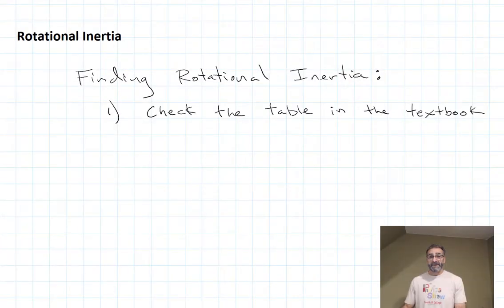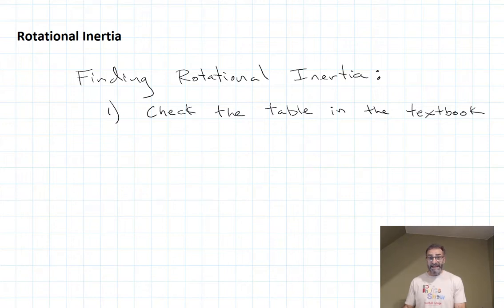Let's go through the procedure for finding the rotational inertia of an object. If you follow my three steps, you'll be in good shape. Step number one is check the table in the textbook. Maybe you'll get lucky and it's there, and you'll be done at that point.